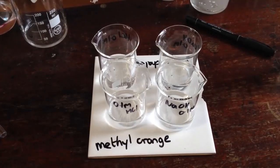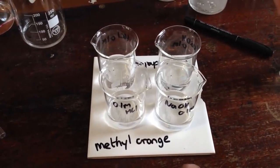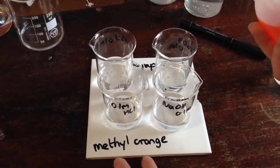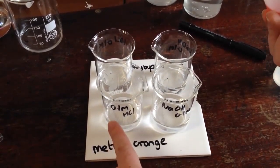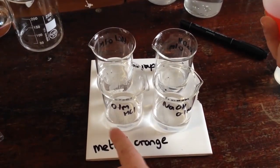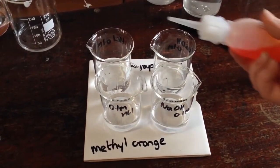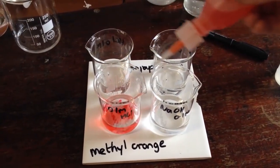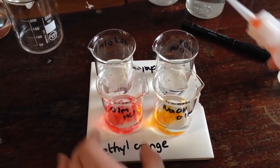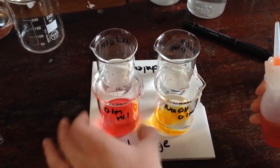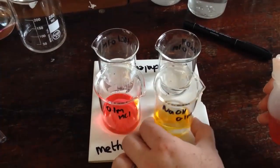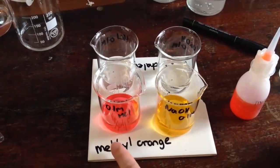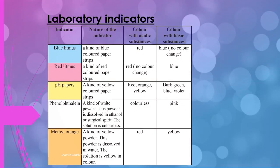The last indicator is methyl orange. Methyl orange is a kind of yellow powder dissolved in water. The solution is yellow in color. In acidic solution, methyl orange turns to red color. In basic solution, it turns to yellow.